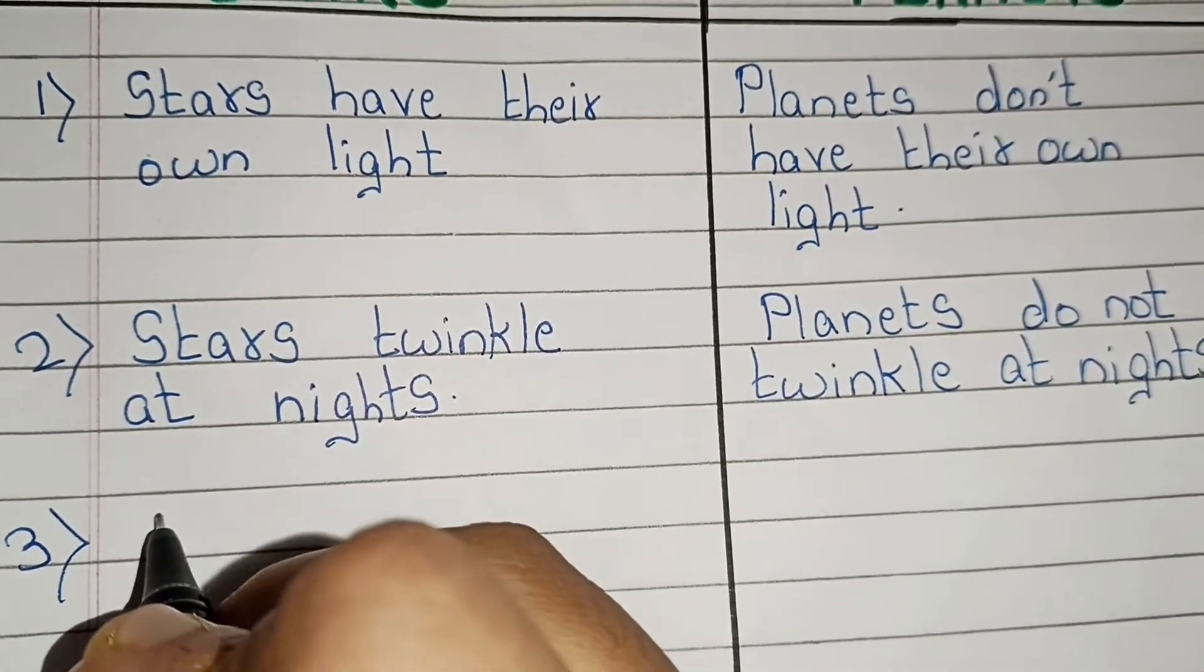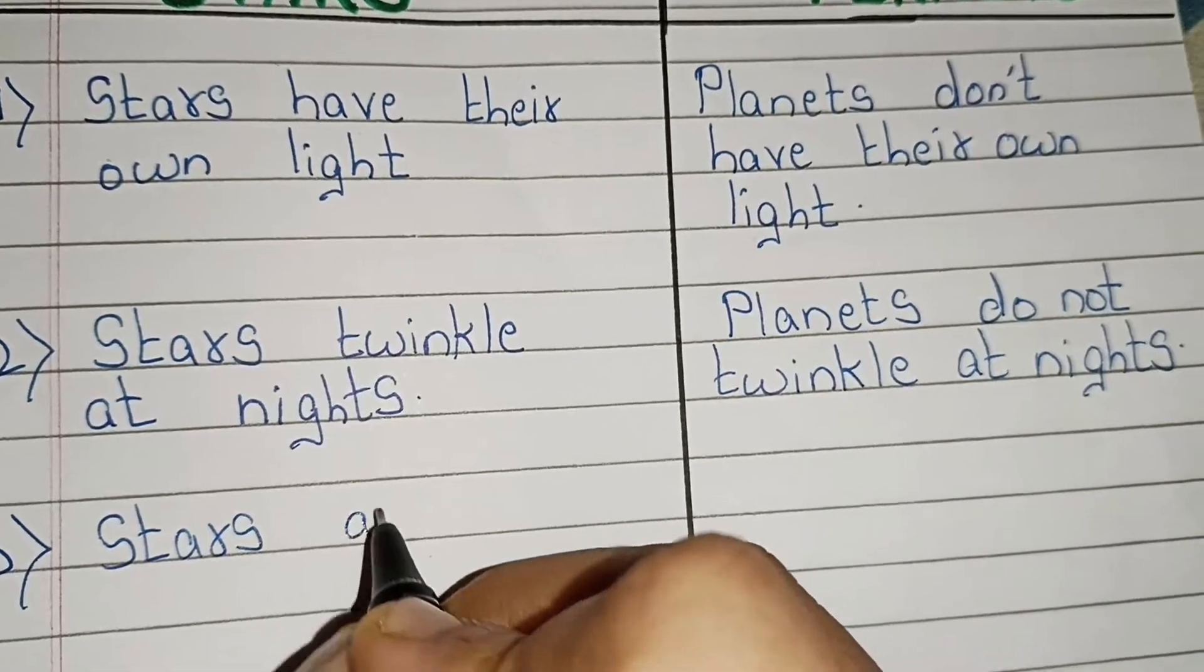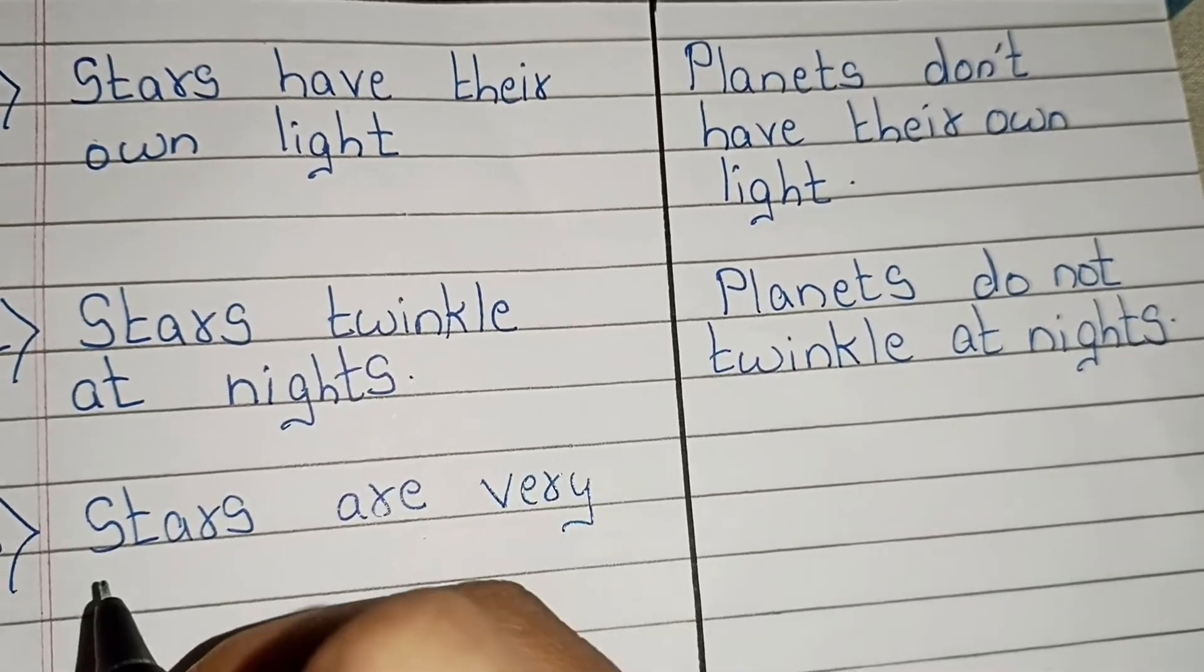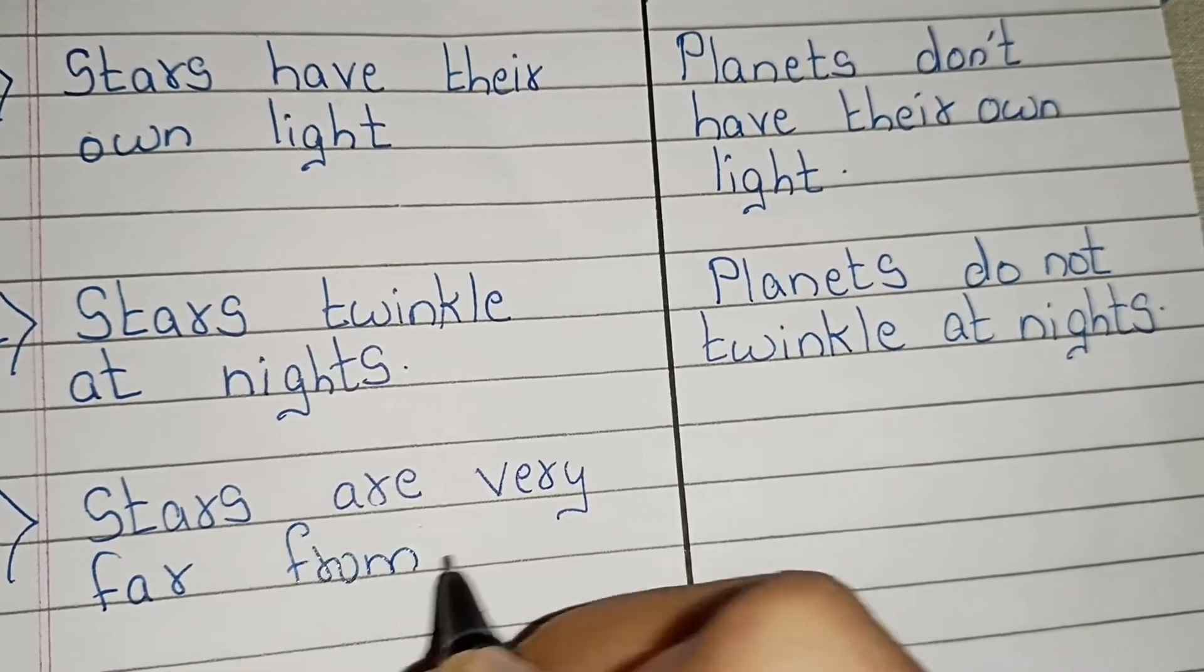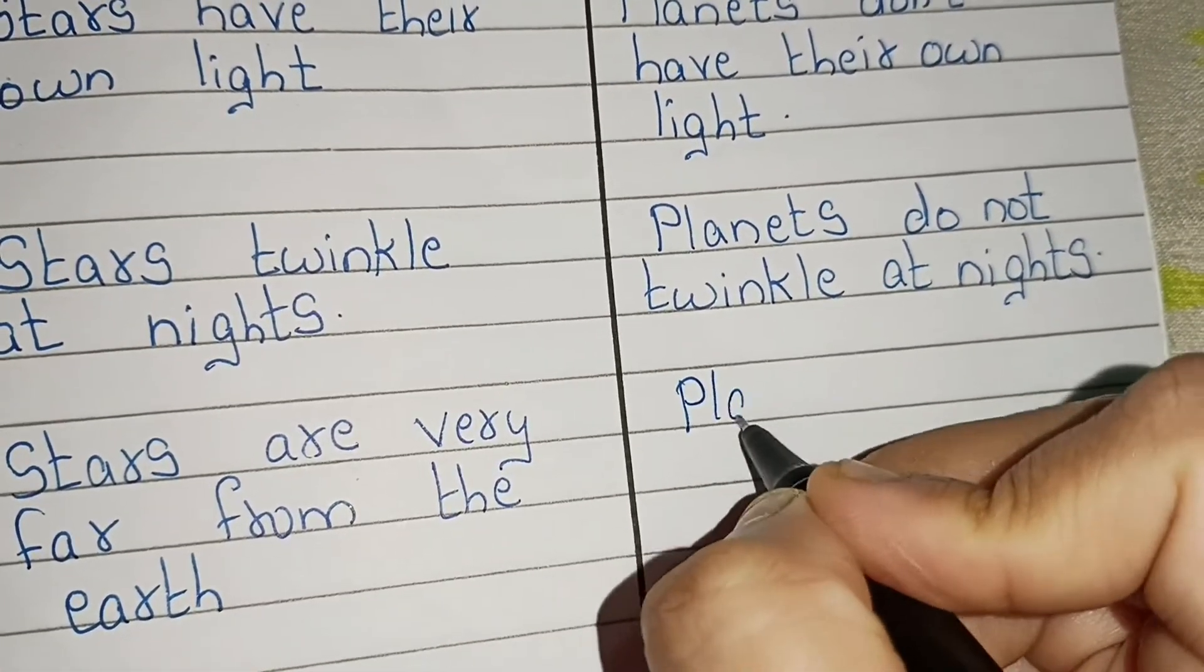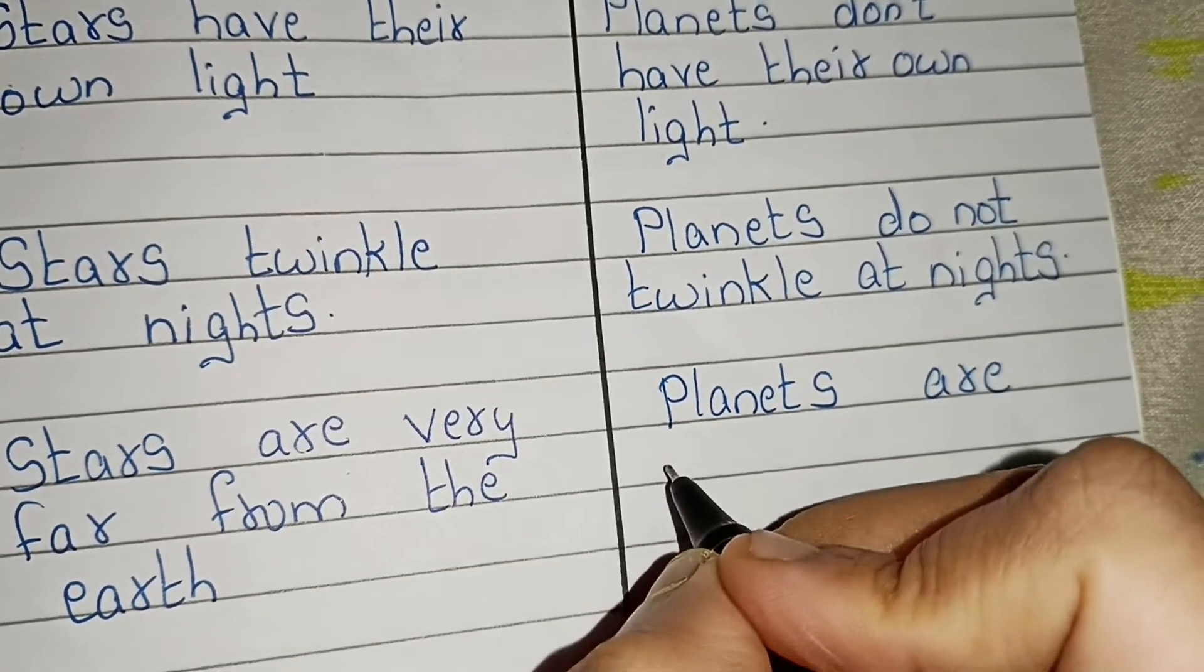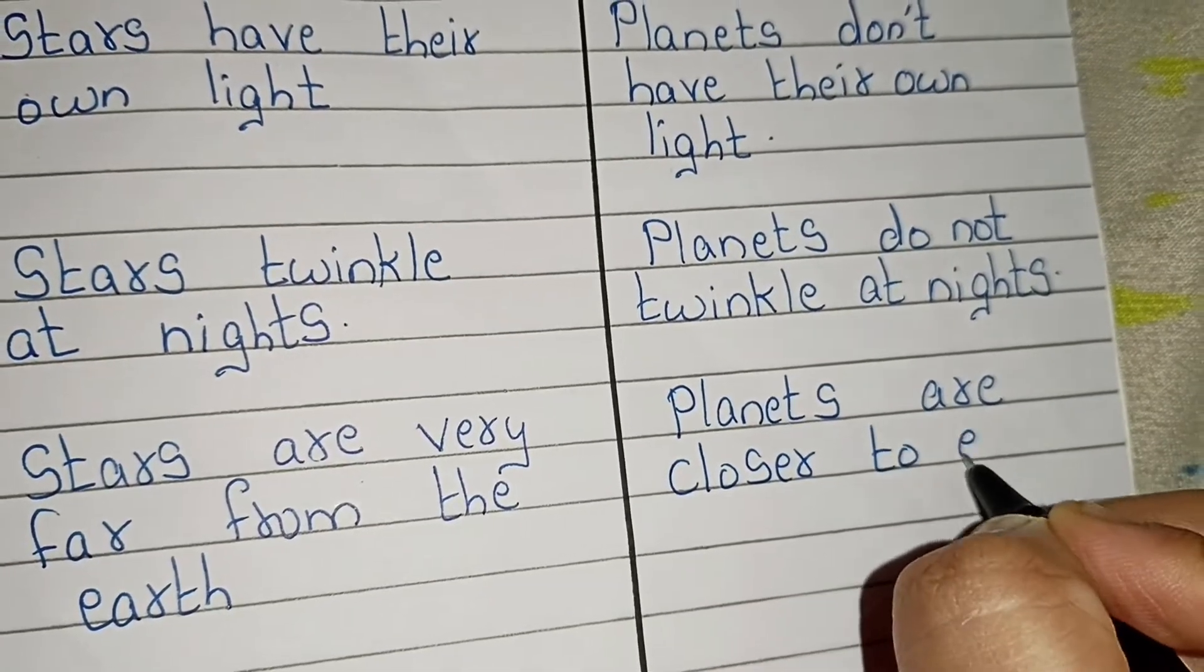Point number third. Stars are very far from the earth. Planets are closer to earth.